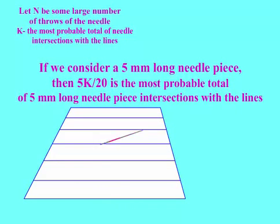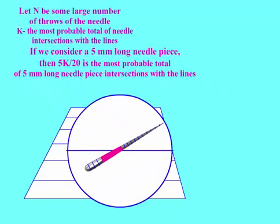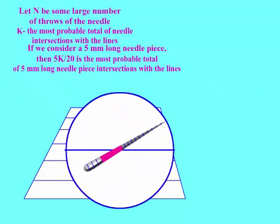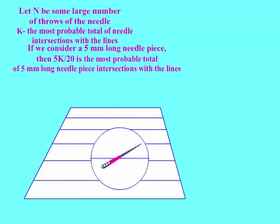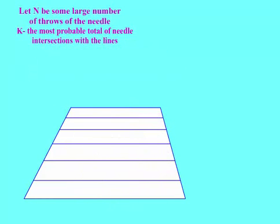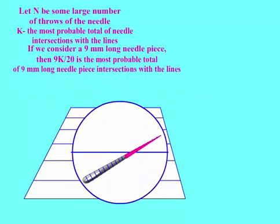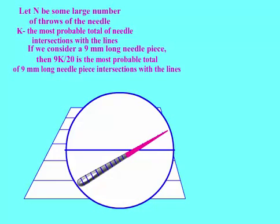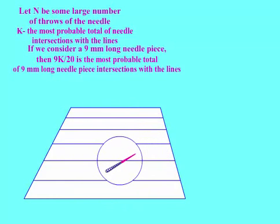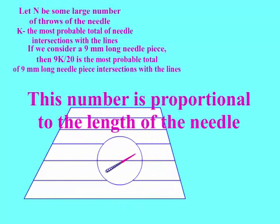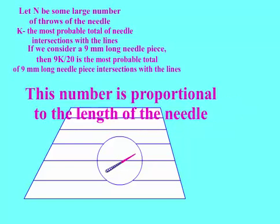If we consider a 5mm long needle piece, then 5K over 20 is the most probable total of 5mm long needle piece intersections with the lines. If we consider a 9mm long needle piece, then 9K over 20 is the most probable total of 9mm long needle piece intersections with the lines. This number is proportional to the length of the needle.